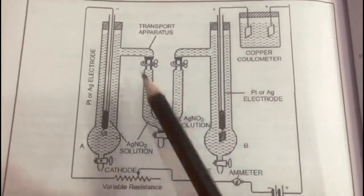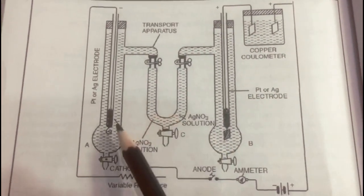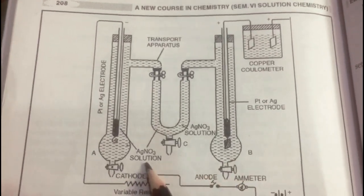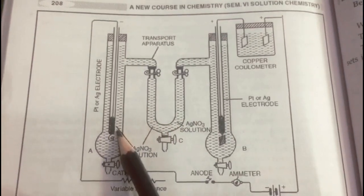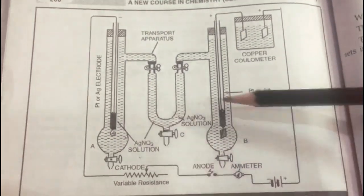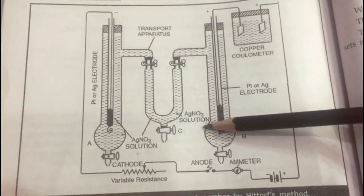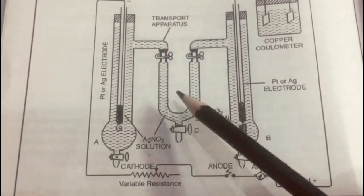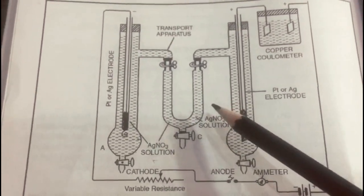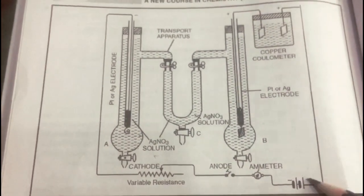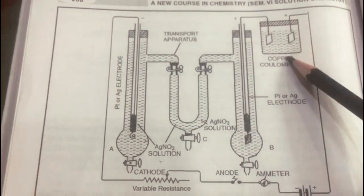Let us discuss the Hittorf apparatus. This is the experimental setup. It consists of two vertical glass tubes connected through a U-shaped tube in the middle, all connected with a stopcock. The U-tube constitutes the central compartment that prevents mixing of solutions from the anodic and cathodic compartments. The electrodes are inserted in the vertical glass tubes, and some mercury is placed at the bottom of the glass tube to make electrical contact. The vertical glass tubes and the U-tube are filled with the suitable electrolyte — here we are taking silver nitrate solution. This setup is connected through a copper coulometer, ammeter, and resistance.